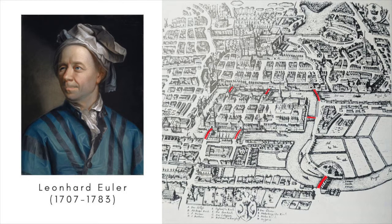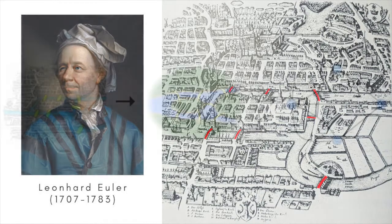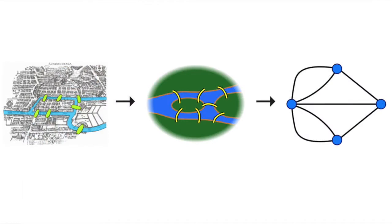Six of the bridges connected the banks of the river, three on either side, with two islands in the middle, while a seventh joined the islands. Euler reduced the problem to its mathematical essentials and, in this way, made it much easier to solve. He realised that the only information of relevance had to do with the connections.